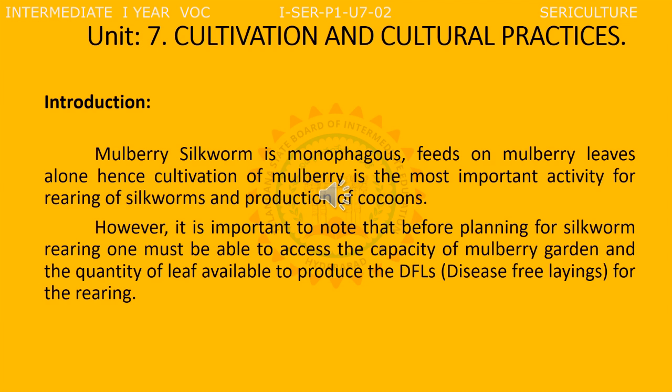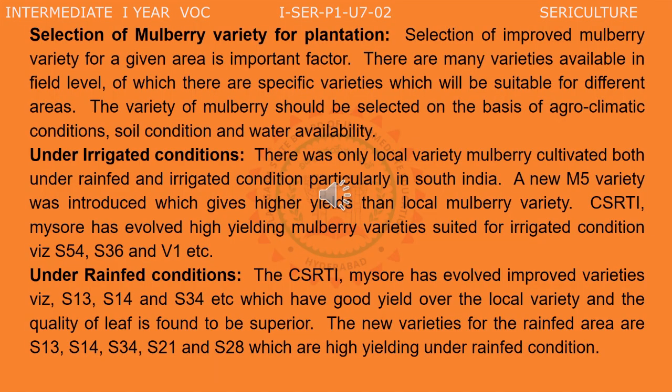However, it is important to note that before planning for silkworm rearing, one must be able to assess the capacity of the mulberry garden with regard to the yield, quality, and quantity of the leaf, to produce disease-free layings for silkworm rearing. The selection of mulberry variety for plantation is key. There are a number of varieties, of which hybrid varieties play an important role for good quality and quantity of leaves for the silkworms. Selection of an improved mulberry variety for a given area is an important factor.